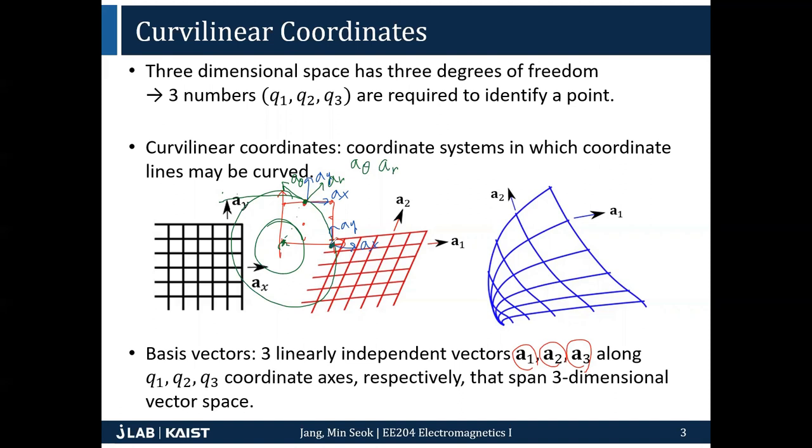But in this position, your A-theta is going up and AR is going here. So the actual direction of your AR and A-theta, the basis vectors, are basically changing as a function of position in this case. This is a big difference between Cartesian coordinates and other coordinate systems. These basis vectors are not a constant. It is a function of the position Q1, Q2, Q3.